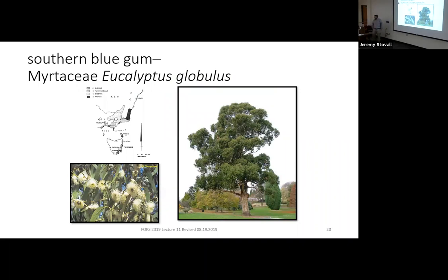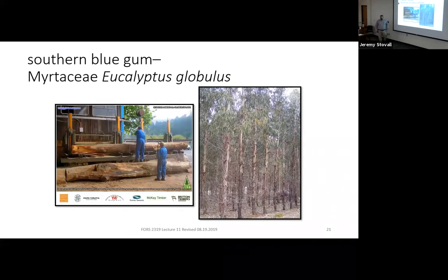Here's another species of eucalyptus: southern bluegum, Myrtaceae Eucalyptus globulus. It has a similar range to E. regnans, found in southeastern Australia in areas that get pretty high rainfall — you can think of these as temperate rainforest. It has similar morphology to other eucalyptus. This species is among the many commonly managed for timber throughout the world. Australia gets droughts that make East Texas droughts look like nothing — decade-long, very severe. Eucalyptus is well adapted, just sitting there and surviving drought, then when rainfall returns, it can photosynthesize at a rate four times as high as loblolly pine and grow very rapidly.